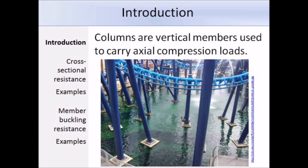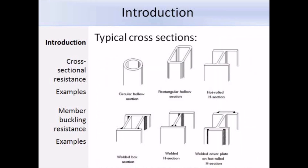The most common form of compression members are columns, which are vertical members used to carry axial compression loads. Examples include members within multi-storey buildings used to support floors and roofs, or mast towers used to provide support for large-span roof structures. Typical cross-sections include circular hollow sections and rectangular hollow sections, which have good geometrical properties but expensive and difficult connections. The most common type are hot-rolled sections, which have large flanges suitable for compression loads and open shapes making connections relatively easy. Built-up sections are also suitable, but care must be taken to avoid local flange buckling.